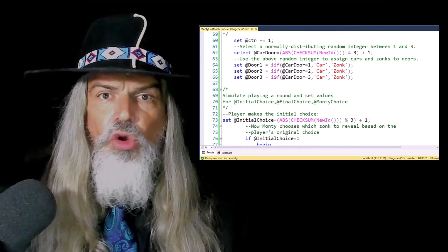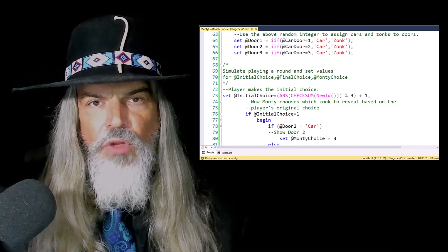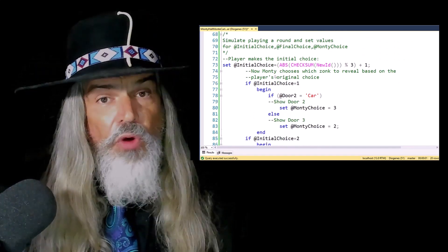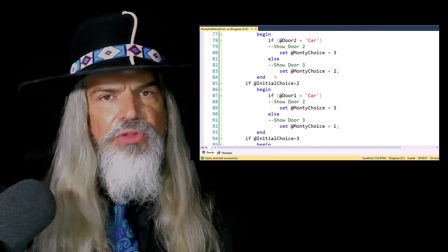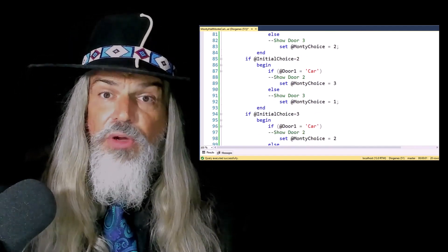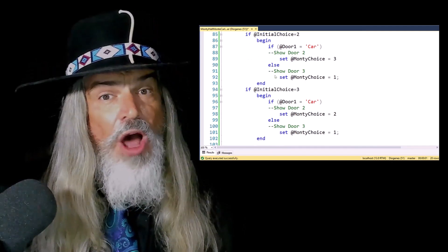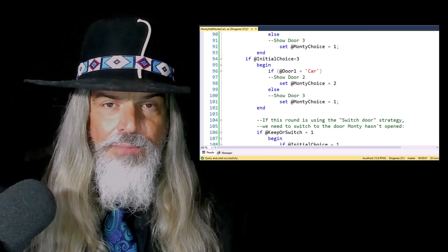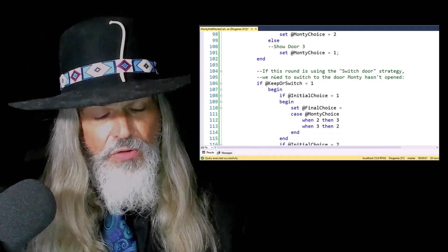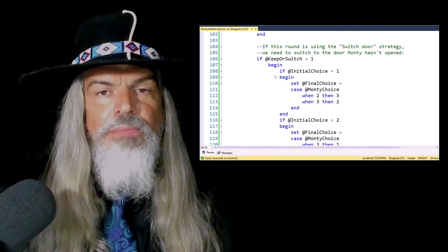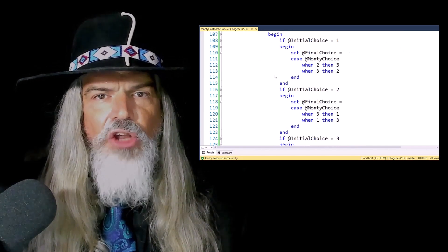Across the total of two million rounds, we would expect for the one million in which we stuck with our original door choice to result in winning the car one-third of the time. We'd expect to win the car two-thirds of the rounds in which we chose the second unopened door.